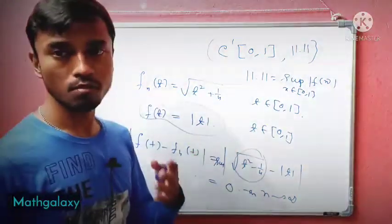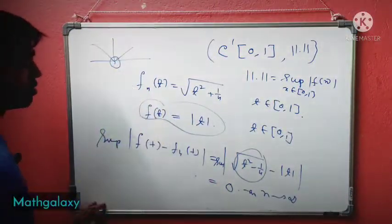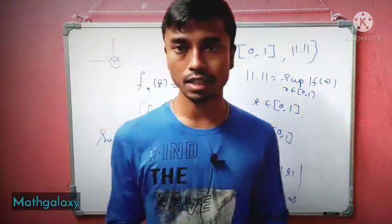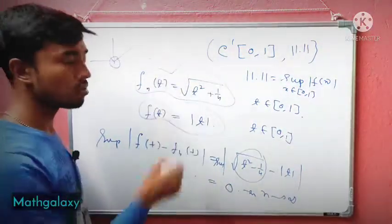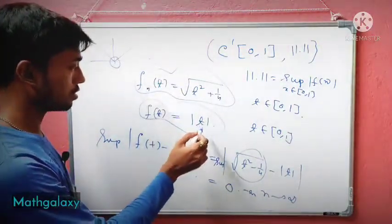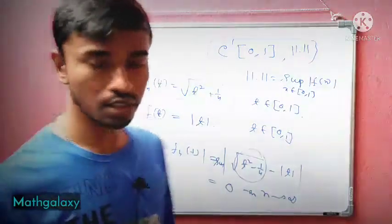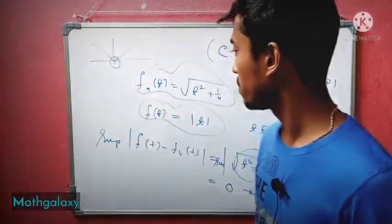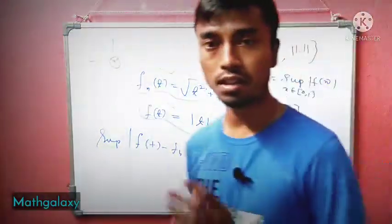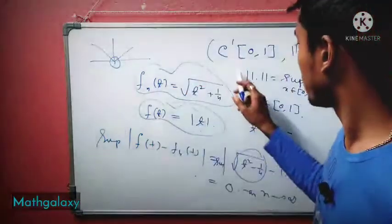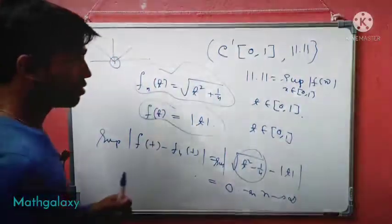The problem is that f(t) = |t|. If you draw the graph of |t|, at the point zero this function is not differentiable. So these continuously differentiable functions converge to a function that is not differentiable — it goes outside the space. Therefore C¹[0,1] equipped with the supremum norm is not a complete normed linear space; it is a normed linear space but not a Banach space.